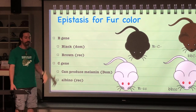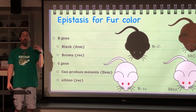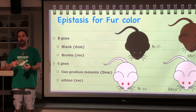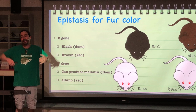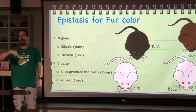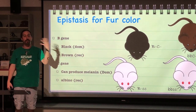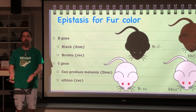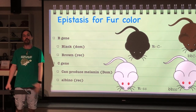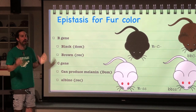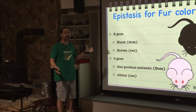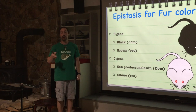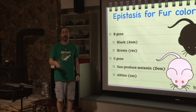It doesn't matter what the first two genes are — if they can't produce color, they can't be black, black agouti, brown, or brown agouti. If they can't produce color, they're just albino. They need to have a dominant allele at the C gene for the A gene or the B gene to matter.